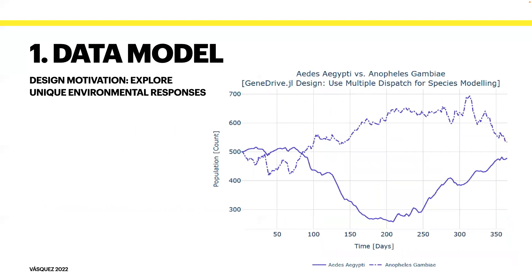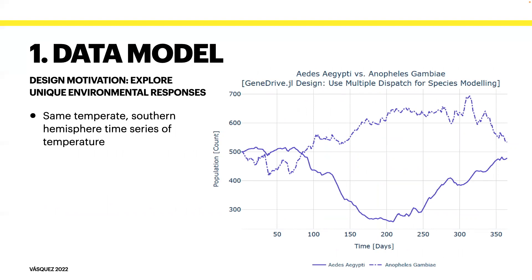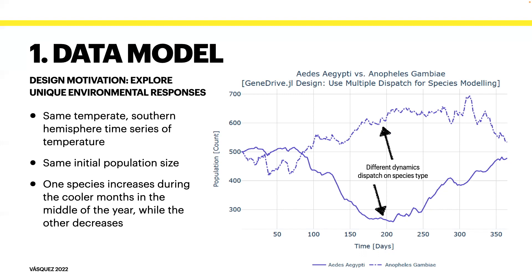To motivate the technical design choice of using Julia structs and dispatch, we'll look at one example application wherein two different disease vector species, Aedes aegypti and Anopheles gambiae, are modeled using GeneDrive.jl. Each species is defined by a type within the model, dispatching unique functional responses to temperature change that have been calibrated using empirical data. Here we have both species modeled over the same time frame of one year using the same temperature inputs, representative of a temperate southern hemisphere and beginning from the same initial population size. We see that the count of the Anopheles increases during the cooler months in the middle of the year while the other decreases, giving us insight into shifting disease risk in this hypothetical scenario.